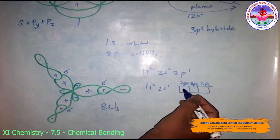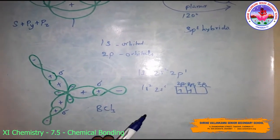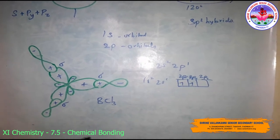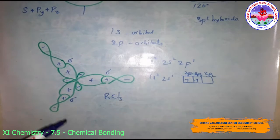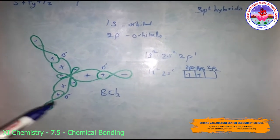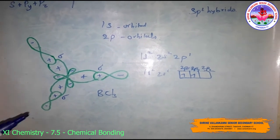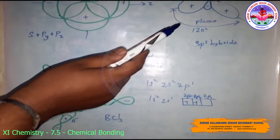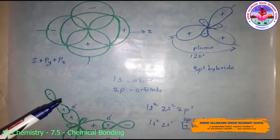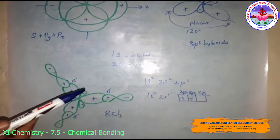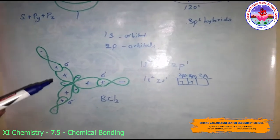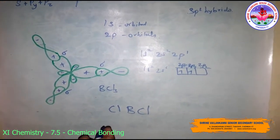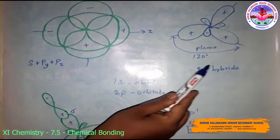In the excited state, boron has three unpaired electrons. The one 2s and two 2p orbitals hybridize to form three sp2 hybridized orbitals. These three hybrid orbitals are oriented in a trigonal planar arrangement and overlap with the 2p orbitals of fluorine to form B–F bonds. Therefore, BCl3 has a trigonal planar geometry with a bond angle of 120 degrees.